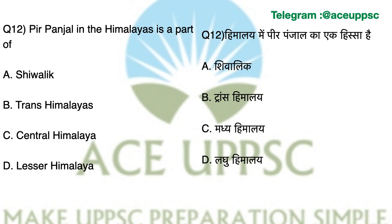Question number 12. Pir Panjal in the Himalayas is part of which Himalayan range? The answer is D: Lesser Himalayas. The Pir Panjal range is part of the Lesser Himalayas, located between the Great Himalayas to the north and the lower ranges to the south. It is extended to the Jhelum River and the upper Beas River.